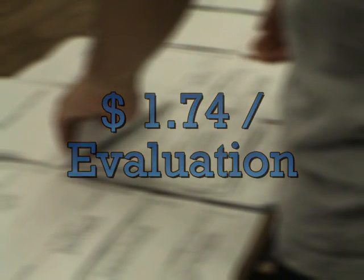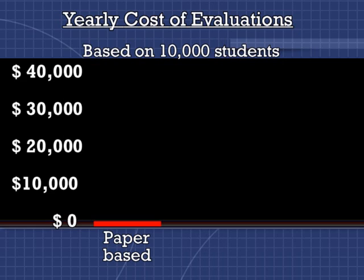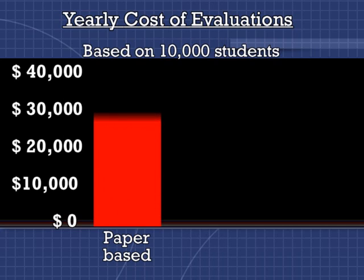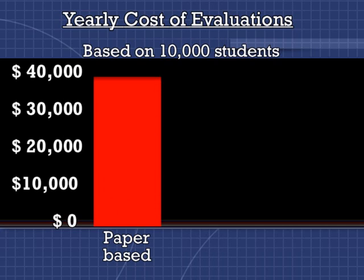This means that even if a university with 10,000 students runs their evaluations four times more efficiently than Kronhelm et al. suggests, that school spends over $40,000 per year performing their evaluations.